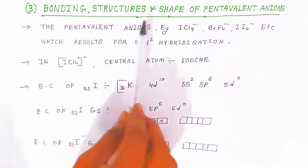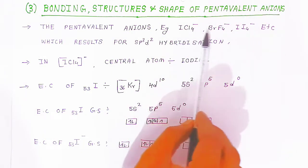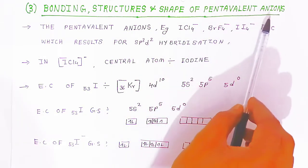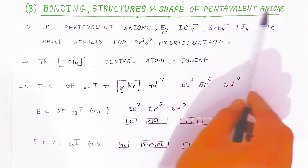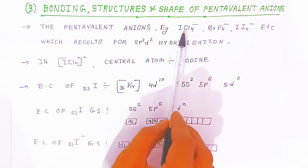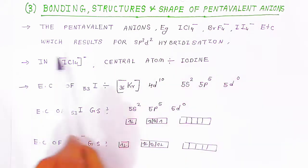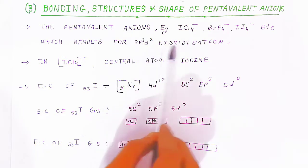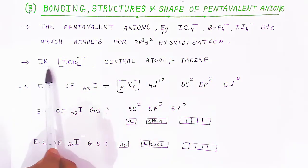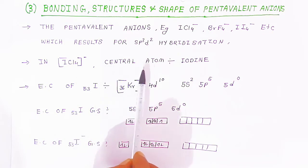Now we are going to see the bonding structure and shape of pentavalent anions. The pentavalent anions — where there are 5 halogens and a negative charge — examples are ICl₄⁻ and BrF₄⁻. These result from sp³d² hybridization. The central atom in ICl₄⁻ will be iodine.